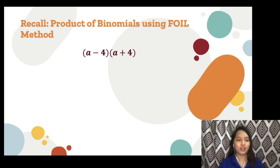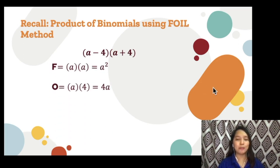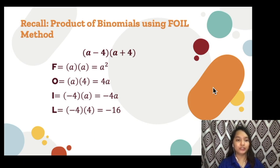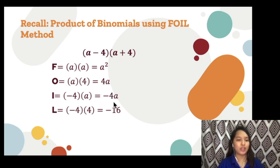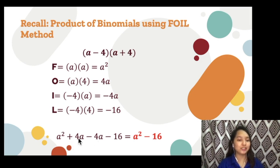Given the quantity a minus 4 times the quantity a plus 4, we apply FOIL — First, Outer, Inner, Last. Multiply the first terms: a times a gives a squared. The outer terms: a times positive 4 gives 4a. The inner terms: negative 4 times positive a gives negative 4a. The last terms: negative 4 times positive 4 gives negative 16. Combining like terms, positive 4a minus 4a is 0, leaving a squared minus 16.